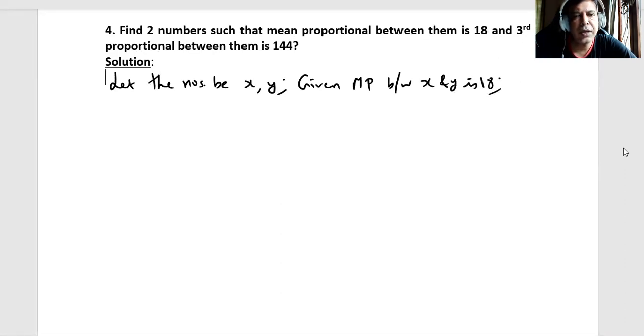Since mean proportional is 18, we can say 18 square is x into y, or square of 18 which is 324 is x into y. Or we can say x is 324 divided by y. Further it says third proportional between them is 144.